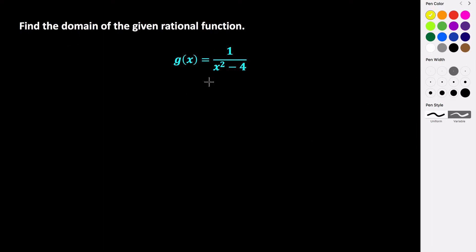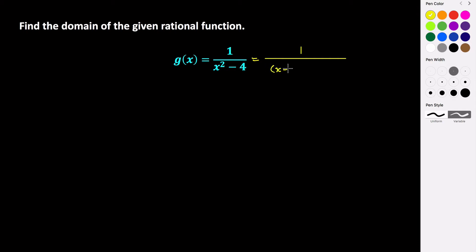In this example, we're given the rational function g of x equals 1 over x squared minus 4. The numerator is never going to be 0, so we don't have to worry about x-intercepts. But the denominator — we can figure out what makes this 0. This actually factors: it's going to be 1 over x minus 2 times x plus 2. So those are the factors of this.